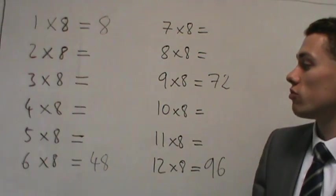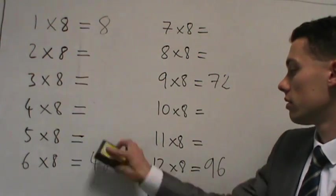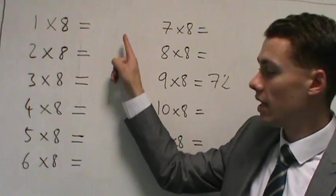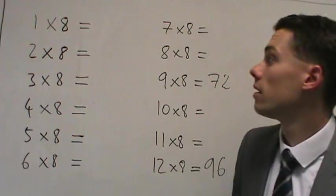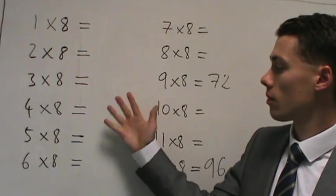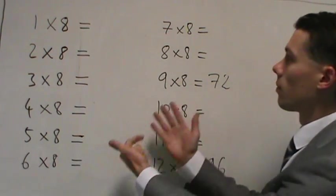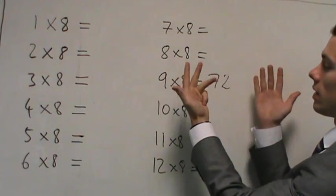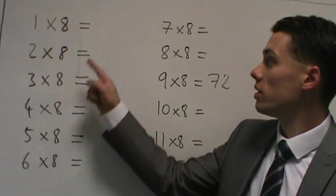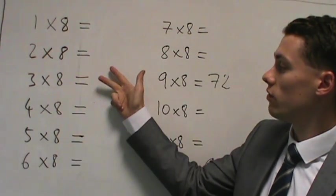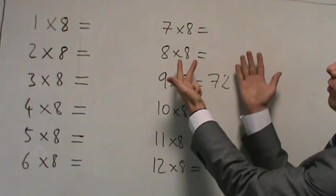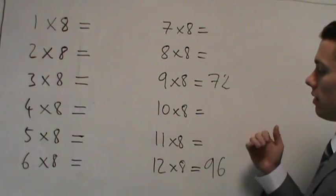So we're going to rub out 2 more again now. We're going to rub out 6 times 8 which is 48. And 1 times 8 which is 8. So 1 times 8 is 8. And 6 times 8 is 48. So let's go again. 72, 96. So hopefully you've got that it was 8, 16, 24, 32, 40, 48, 56, 64 and then 80 and 88.